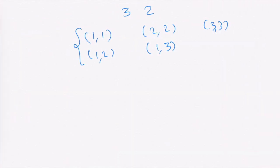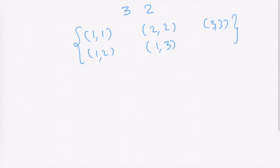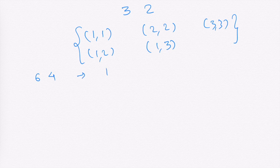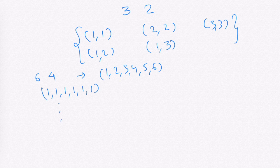Similarly, in the second example, the input is n=6 and k=4, so the range of numbers is 1 through 6. One possible output sequence is (1,1,1,1), and so on. We have to calculate how many such subsequences satisfy the good sequence condition — numbers can also repeat.